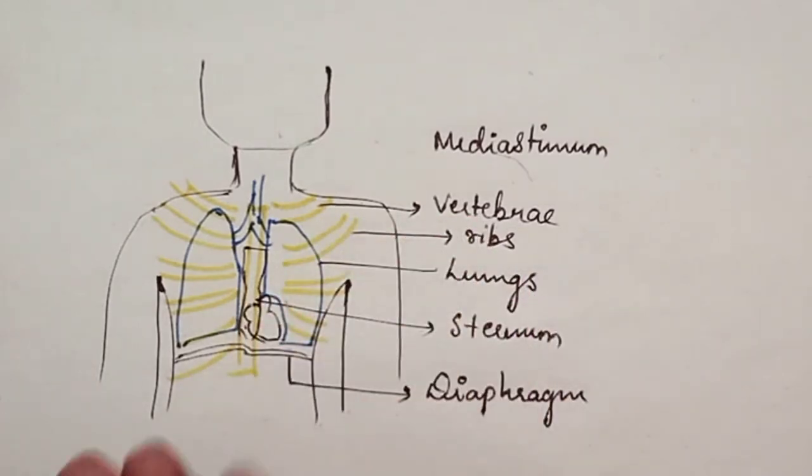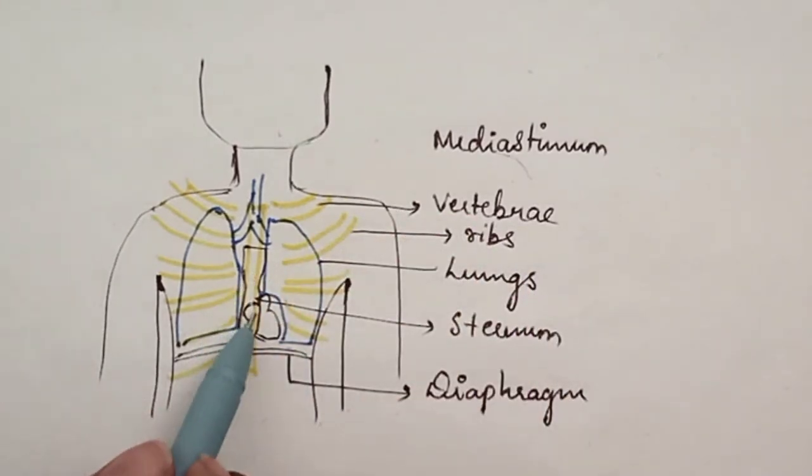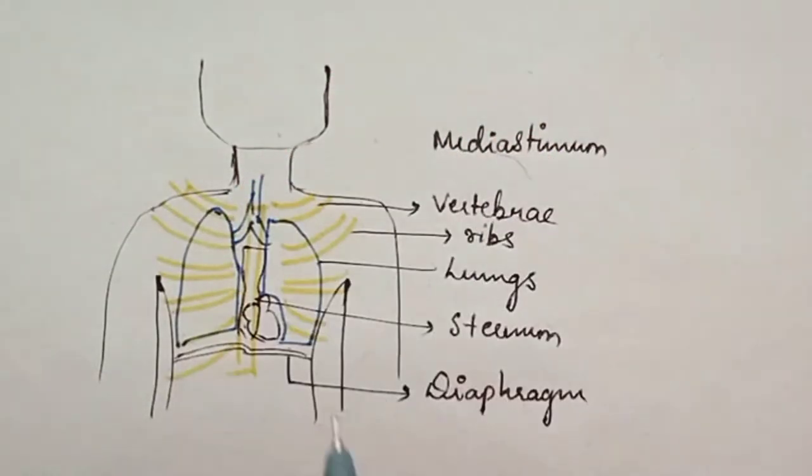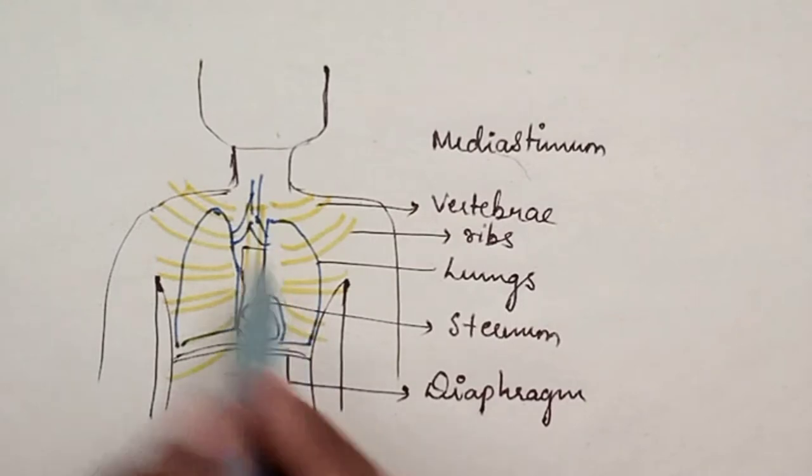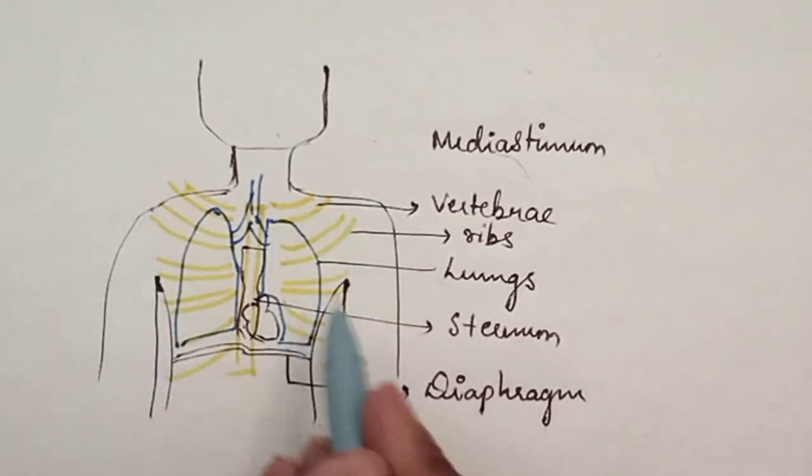On the anterior side, the heart is protected by a bony plate called the sternum. On the posterior side, it lies in front of the vertebrae. Lastly, the ribs provide additional protection.